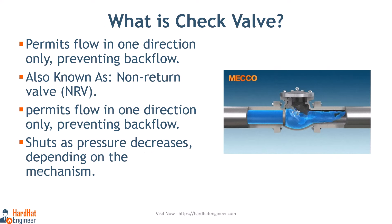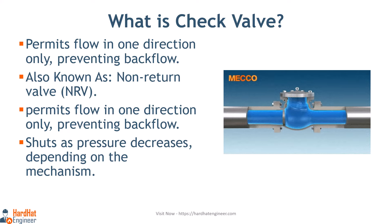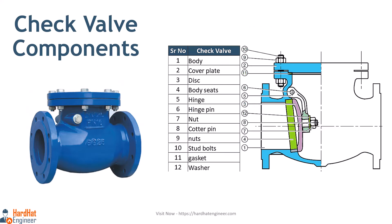What is a check valve? Check valves permit flow in one direction only, preventing backflow and ensuring unidirectional movement of fluids in pipelines. It is also known as a non-return valve or NRV. The pressure of the fluid passing through a pipeline opens the valve, while any reversal of flow will close the valve. It allows full unobstructed flow and automatically shuts as pressure decreases. It consists of the body, cover, disc, hinge pin, and seat ring.